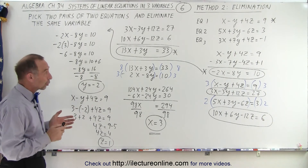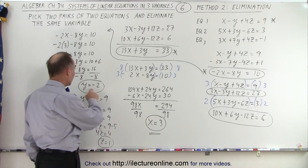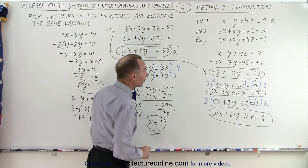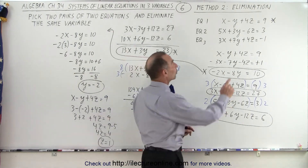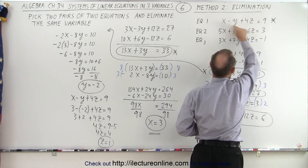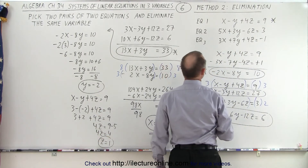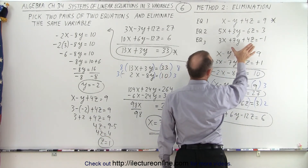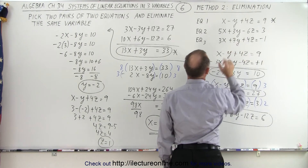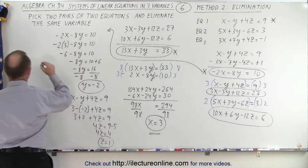To make sure we did it correctly, we take z equals 1, y equals negative 2, and x equals 3, and plug that into another equation — not the first one, because we used that one to find z. So we take another equation and plug everything in to see if we did it correctly.